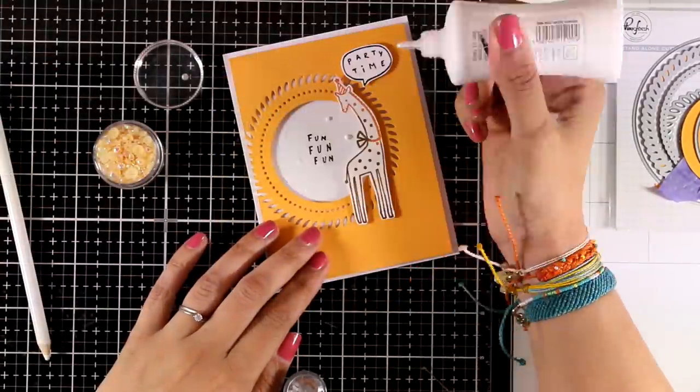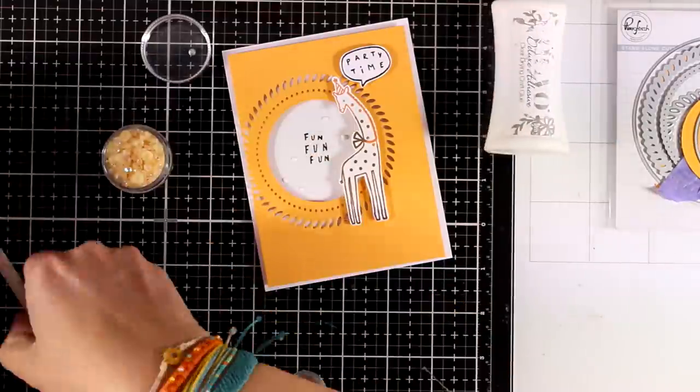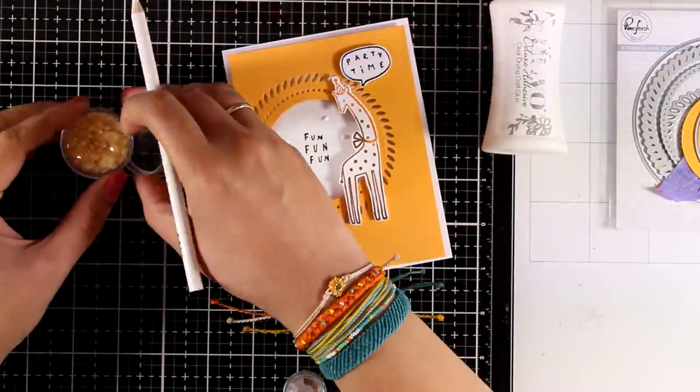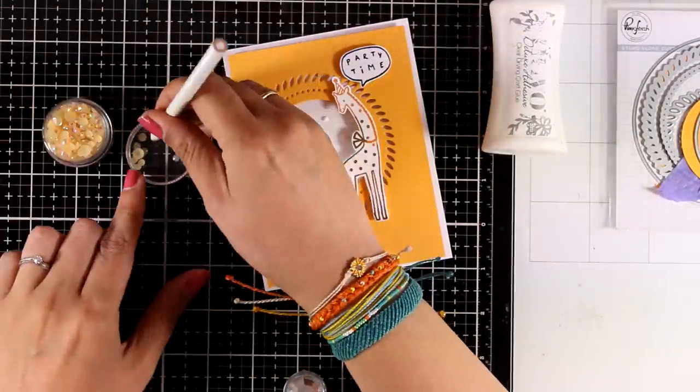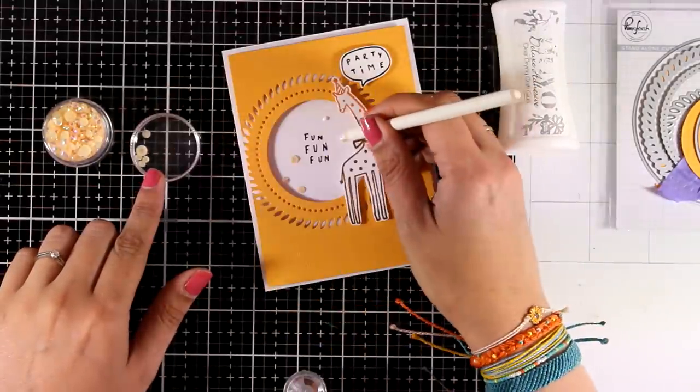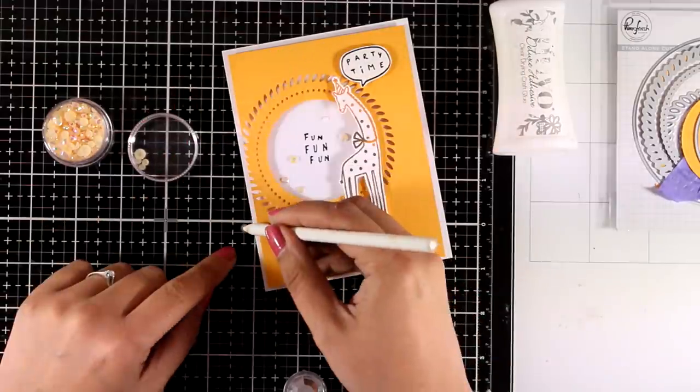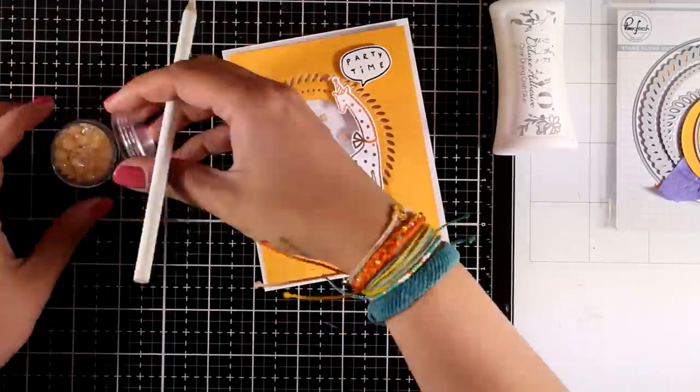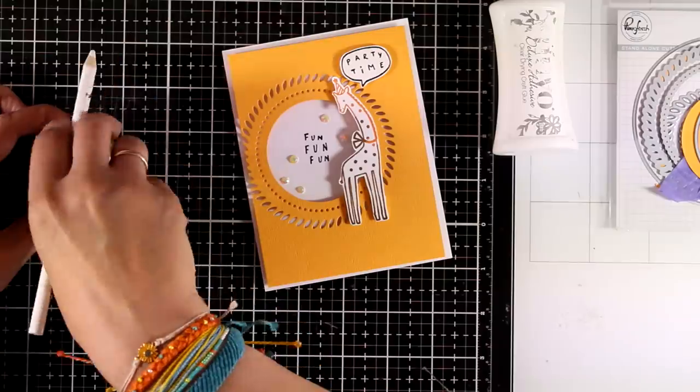On the inside of that circle, of that window, I'm going to add some of the jewels that come from this release. They're going to make my card even more special by adding that sparkle. And of course, you can easily turn this idea, this design, into a shaker card if you like.